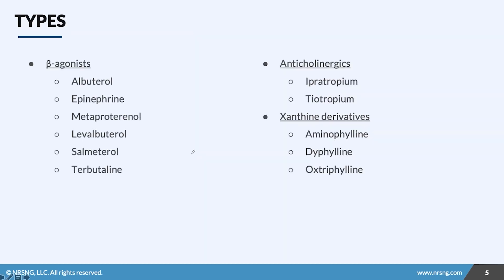The types of bronchodilators are broken down into three groups: beta agonists, anticholinergics, and xanthine derivatives. Most acute care and hospital settings deal with beta agonists. They all have the same ending — terol — very easy to remember. The number one in the hospital setting is albuterol and epinephrine. If you have an acute airway issue where your patient's in respiratory distress, those are going to be your go-to.